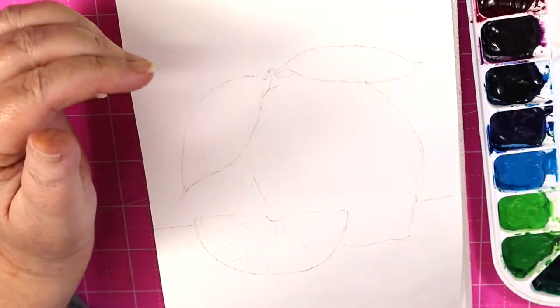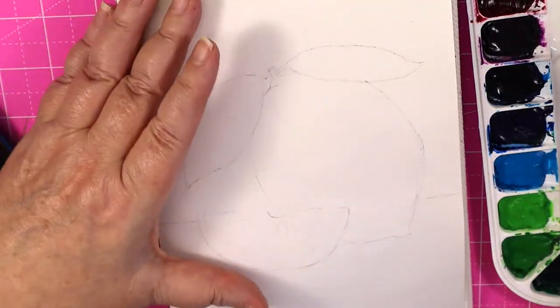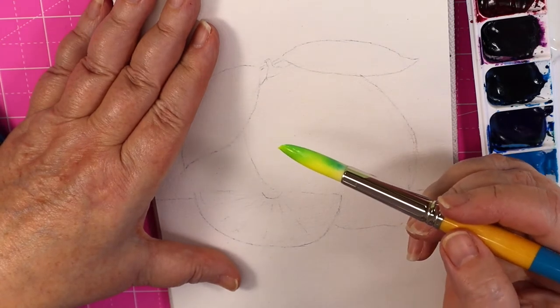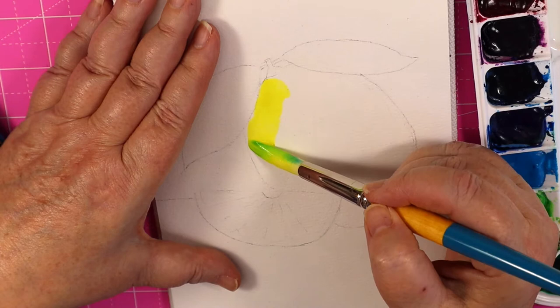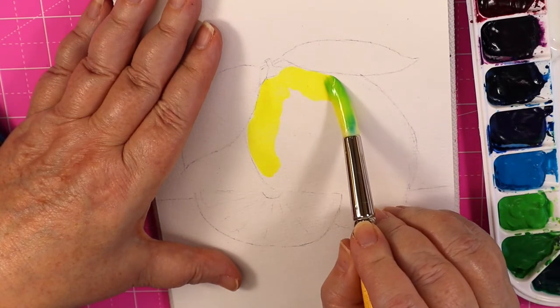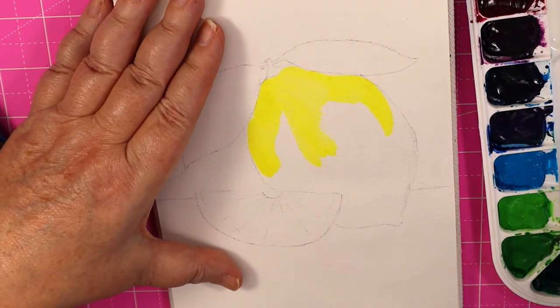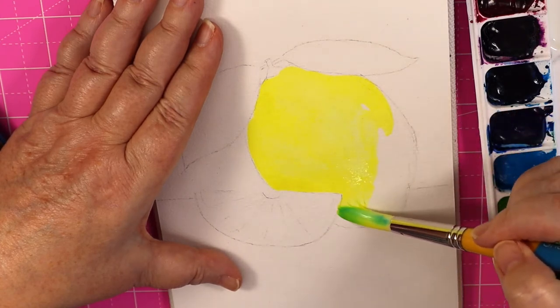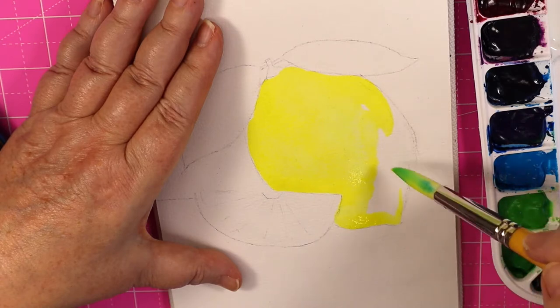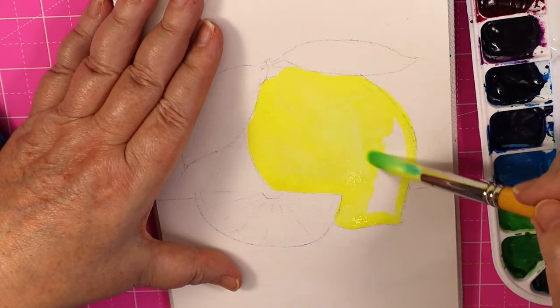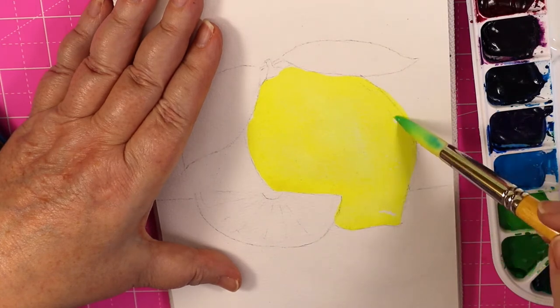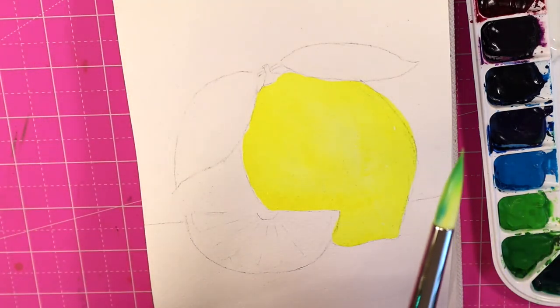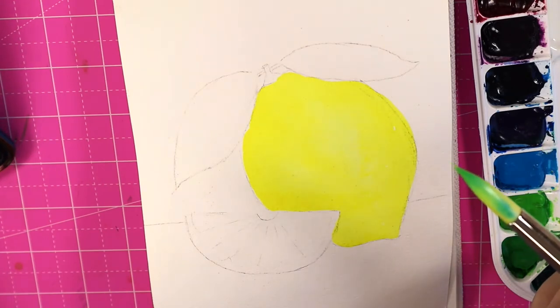If you draw light enough you really don't have to erase. So I'm going to start with a very light wash of lemon yellow, permanent yellow lemon, on my whole lemon. I'm just going to work on this big lemon right now.